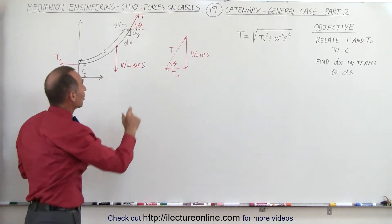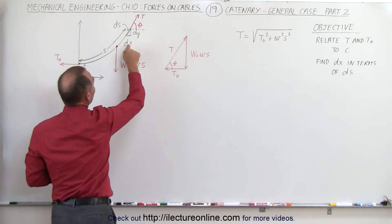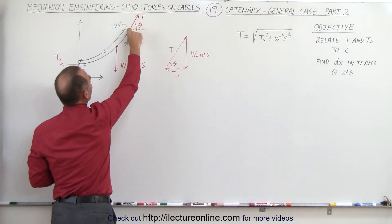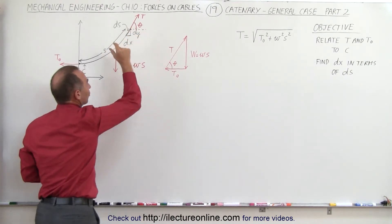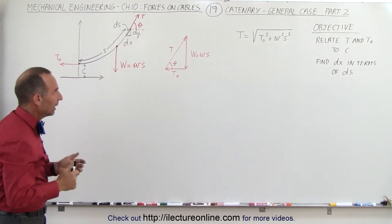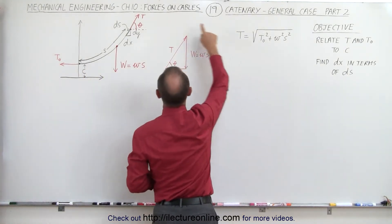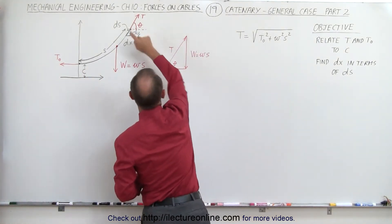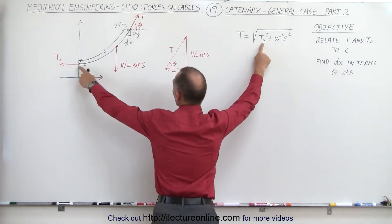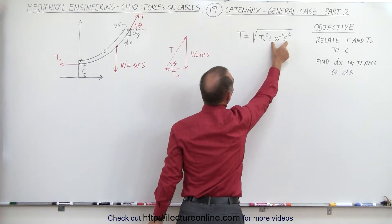Notice the relationship of a very small segment of that section, where we have dx — a small change in the x direction — dy, a small change in the y direction, and dS, a small section of the cable itself. Using this relationship, we can see that the tension T at the end of that section equals the square root of T sub knot squared plus the weight of the cable squared.